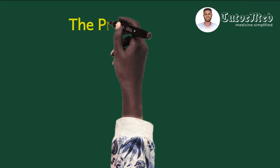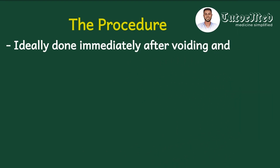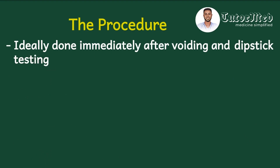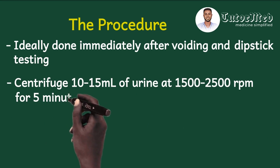Let's briefly look at how to get the specimen for microscopy. Ideally the microscopy should be done immediately after the patient voids and the urine dipstick is done on the specimen. We draw out about 10 to 15 ml of urine and centrifuge that volume at 1500 to 2500 revolutions per minute in the centrifuge for five minutes.